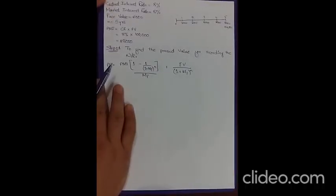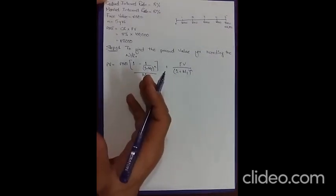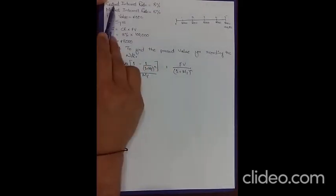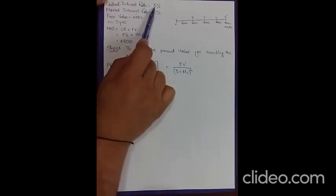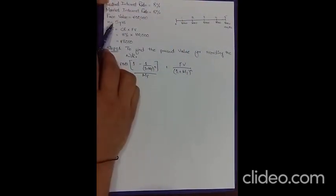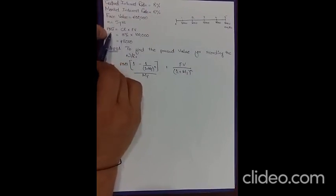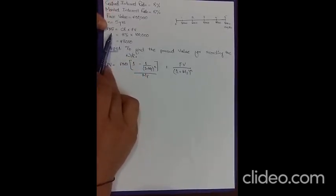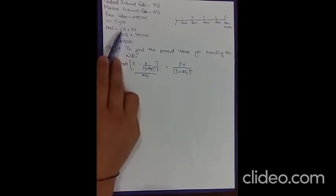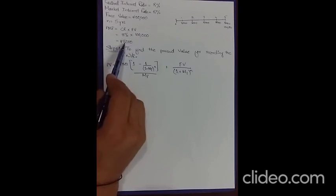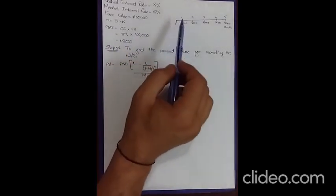To summarize the data before starting the solution: the contract interest rate is 8%, the market interest rate is also 8%, the face value of the note receivable is $100,000, and the life is five years. Based on this data, we calculate the PMT — the periodic payment made by the borrower to the lender — which is the coupon rate multiplied by the face value: 8% × $100,000 = $8,000 per year.